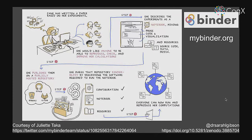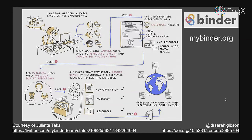To make that repository Binder-ready, she creates a configuration file that describes the software required to run the notebook. If you're a Python user familiar with pip-installing things, then the requirements.txt file — just a plain text document that lists packages — is already your Binder configuration file. It's already working with community standards for how you describe your software.